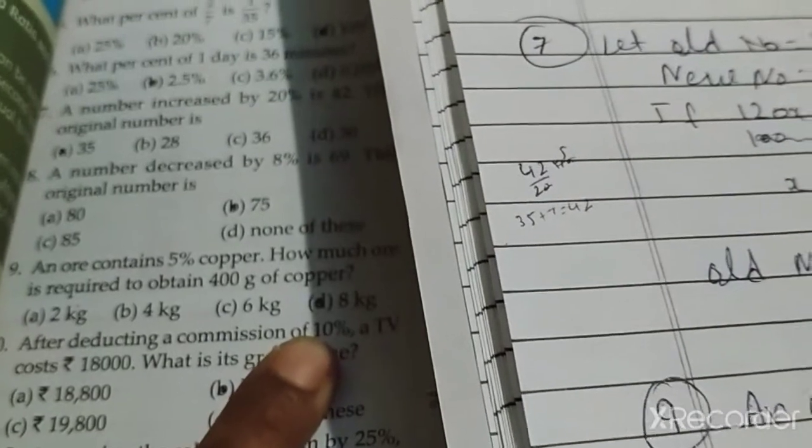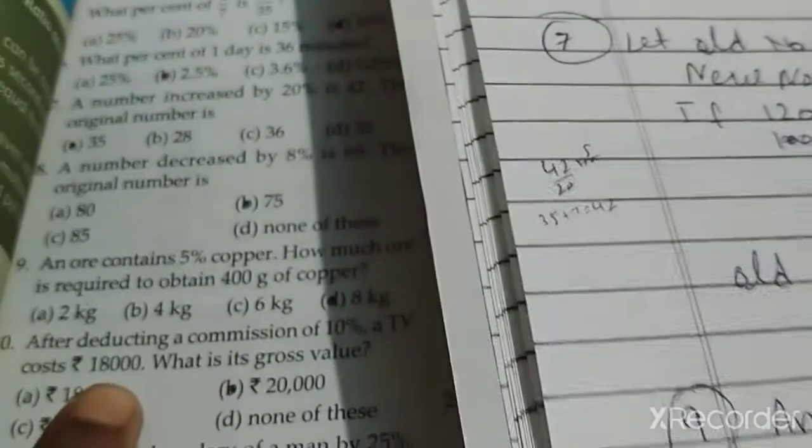Question number 10: one item pe 10% discount hai, so discount is 10%, and the selling price is 18,000. So MP multiplied by 100 upon 100 minus discount - if discount is 10, it's 90 - then MP will be 20,000.